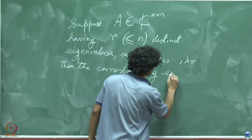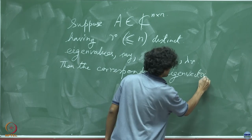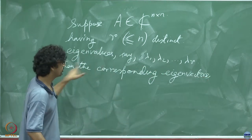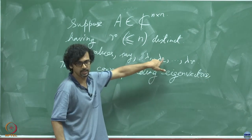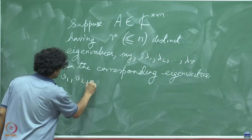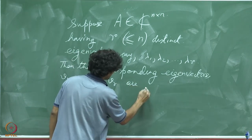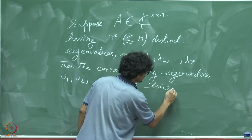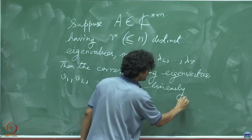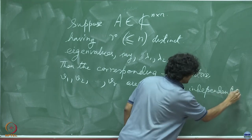Then the corresponding eigenvectors, so when I say corresponding, V1 goes with lambda 1, V2 with lambda 2 and so on, V1, V2 till VR are linearly independent.